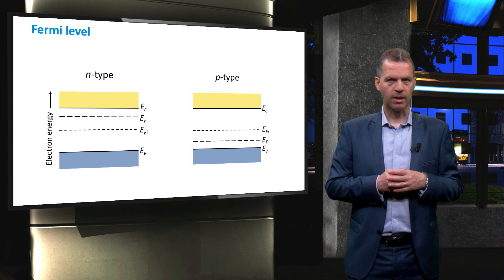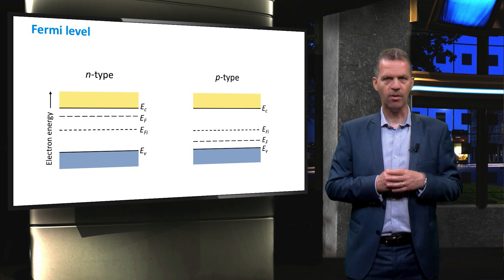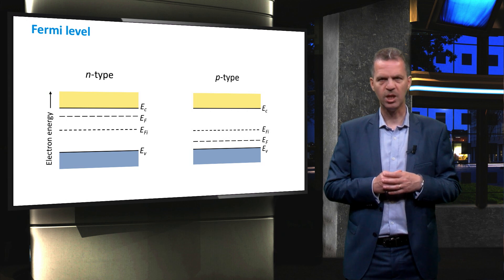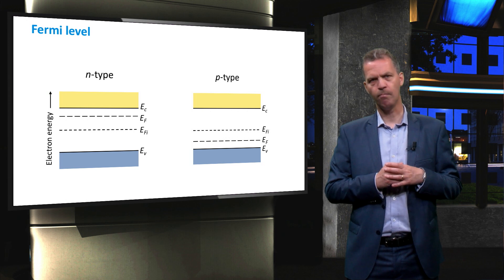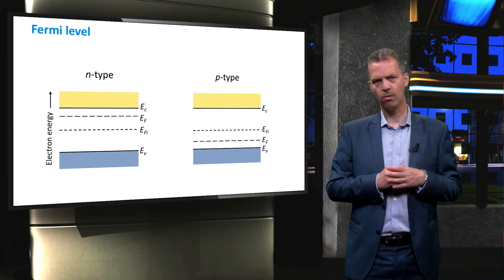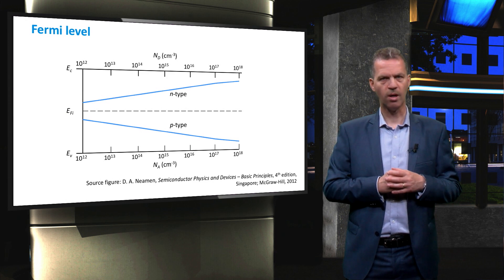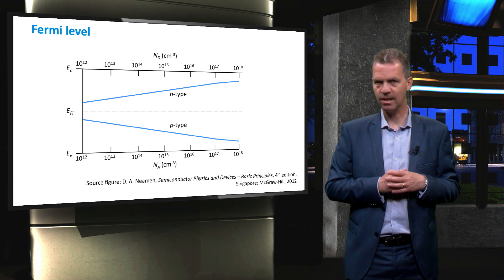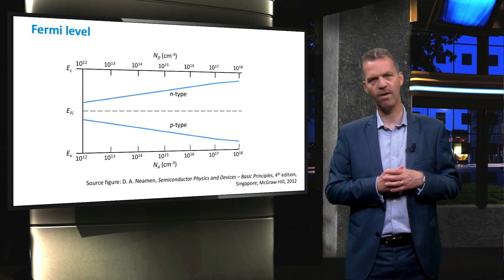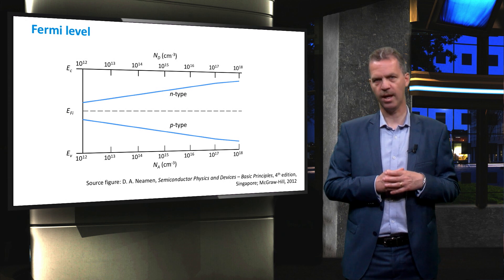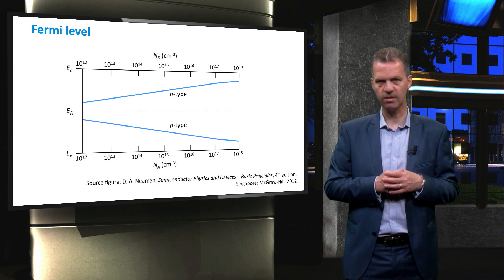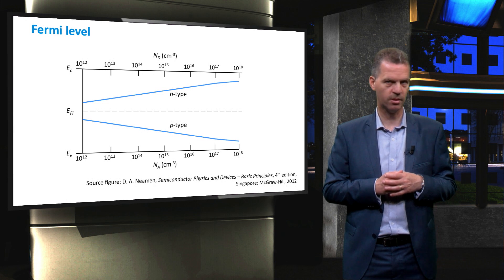In the band diagram of N-type crystalline silicon the Fermi level will therefore be shifted towards the conduction band, while in the P-type silicon the Fermi level will be closer to the valence band. This graph shows how the Fermi level steadily moves towards the conduction and valence band, when the donor and acceptor concentrations are increased for N-type and P-type crystalline silicon respectively.